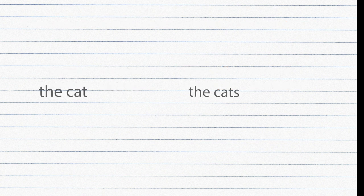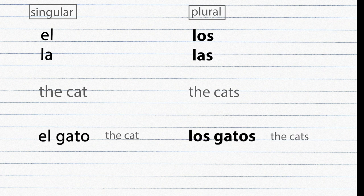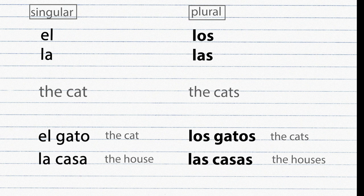In English, the definite article 'the' is the same for singular and plural nouns. But in Spanish, if the noun is plural, the definite article must also be plural. El becomes Los; La becomes Las. Examples: El gato → Los gatos, La casa → Las casas.